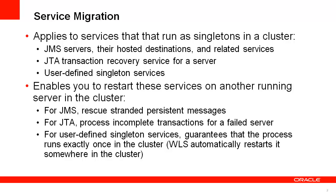High availability is achieved by migrating a migratable target from one clustered server to another when a problem occurs on the original server. This allows you to recover JMS messages that have been persisted by a JMS server while pinned to a managed server, process transactions that were in-flight in which the original server was a participant, and move user-defined singleton services from one server to another while ensuring that they are executed on only one member of the cluster at a time.